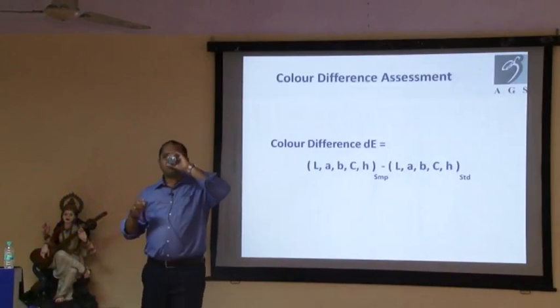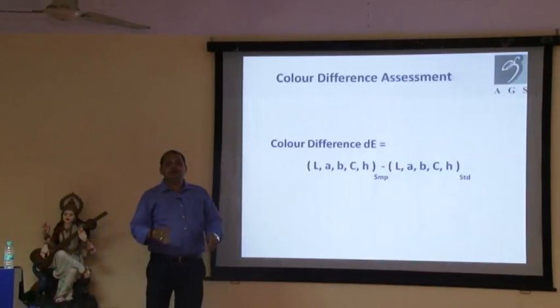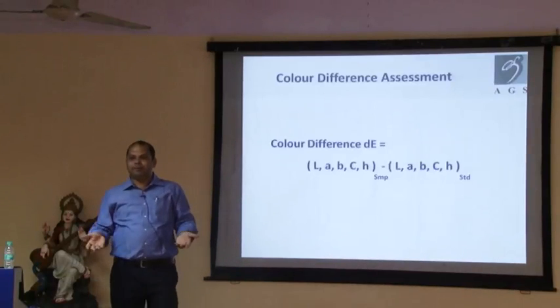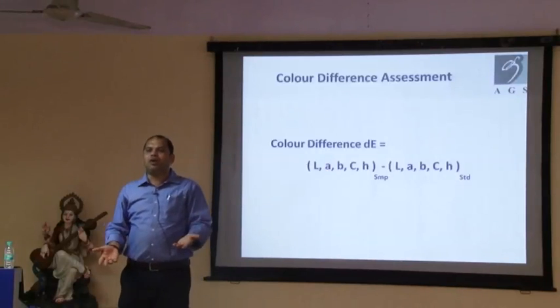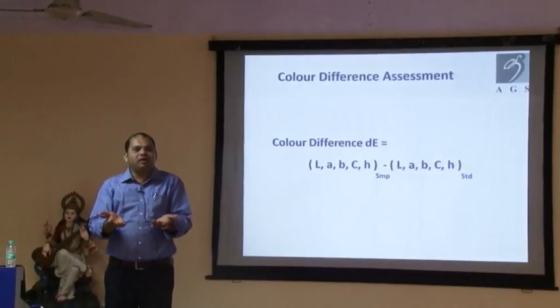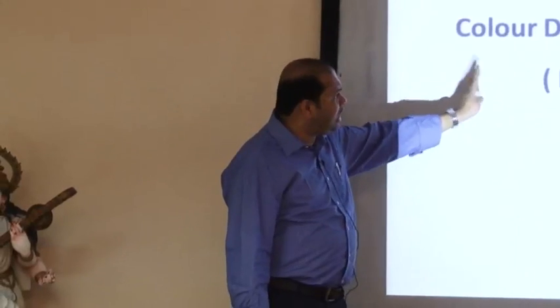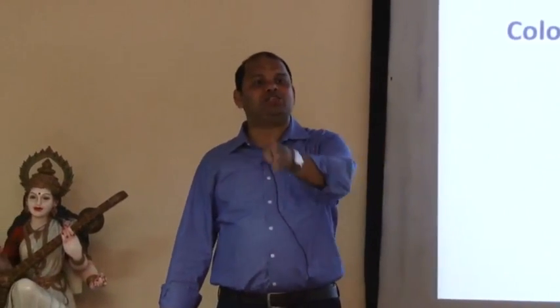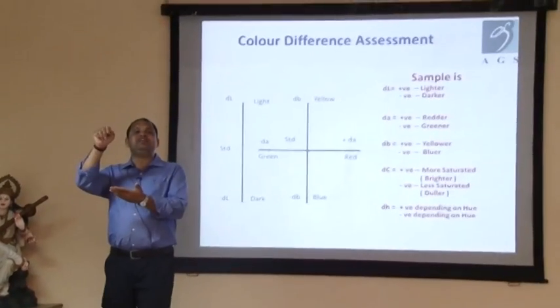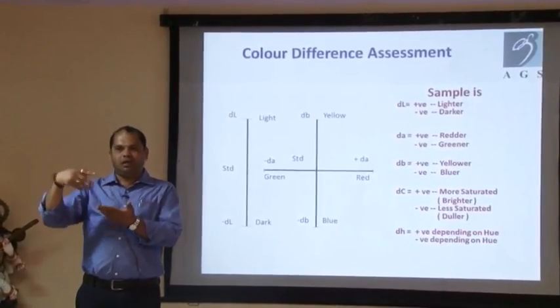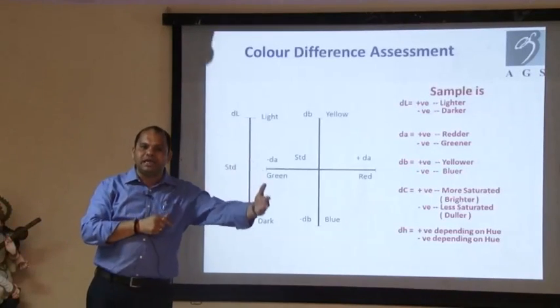Once you have the LAB of your standard and sample, we need to find out the difference — that's your final aim. That's LAB, CH of sample minus LAB, CH of standard. When you do it, the value you get is basically the delta — the difference. It can also be represented as a triangle (∆) or D. In some instruments you'll see triangle, in some books you'll see D — it means the same.